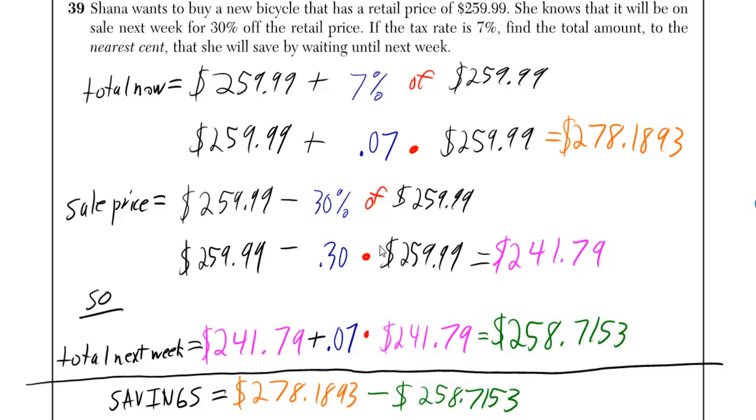Shana wants to buy a new bicycle that has a retail price of $259.99. She knows that it will be on sale next week for 30% off the retail price. If the tax rate is 7%, find the total amount to the nearest cent that she will save by waiting until next week.